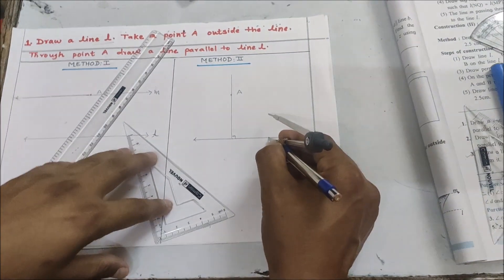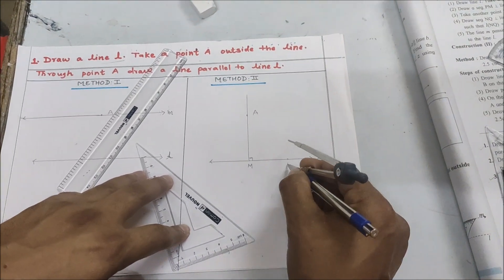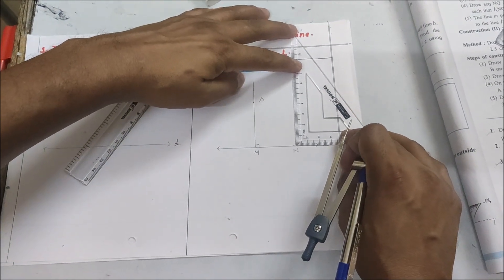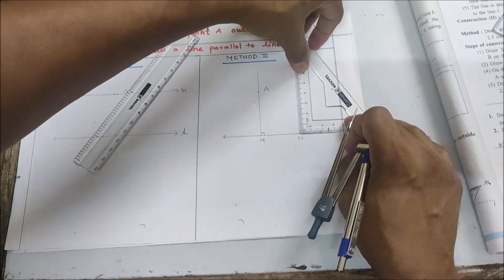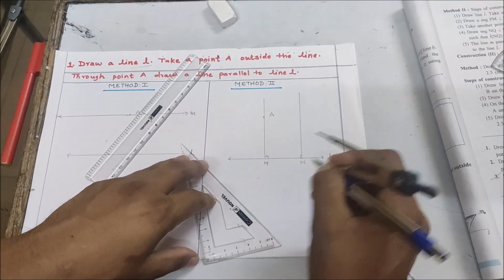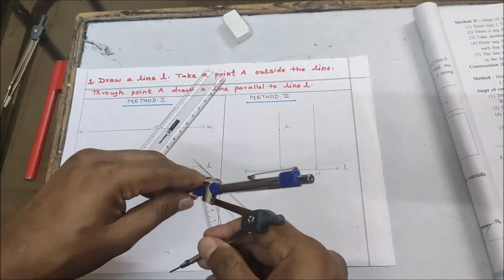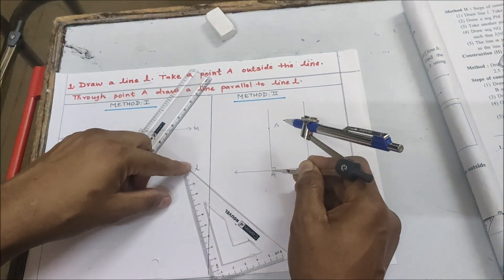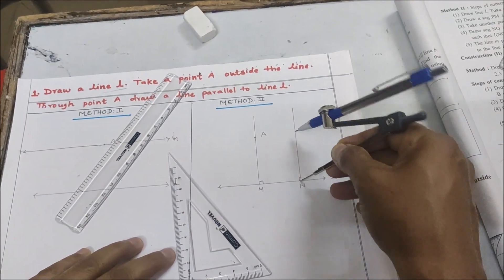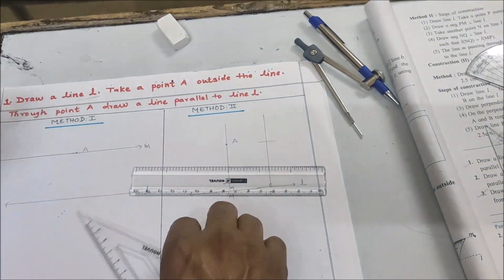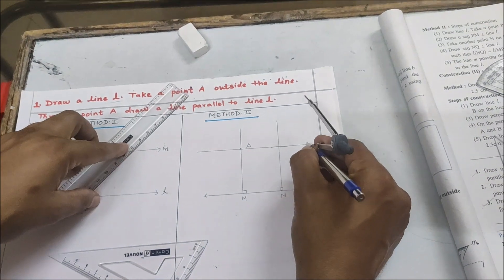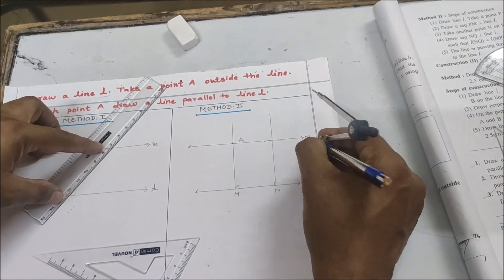We will take one more point on the perpendicular — say point M and point N. From point N we will draw another perpendicular using the set square, placing it so the horizontal line lies on the perpendicular and the vertical edge faces up. Now we will draw an arc on the second perpendicular equal in length to MA. We take the compass set to length MA and mark an arc of the same length on the second perpendicular. Joining this arc with point A gives us the parallel line. We name this line m, which passes through A and is parallel to l.